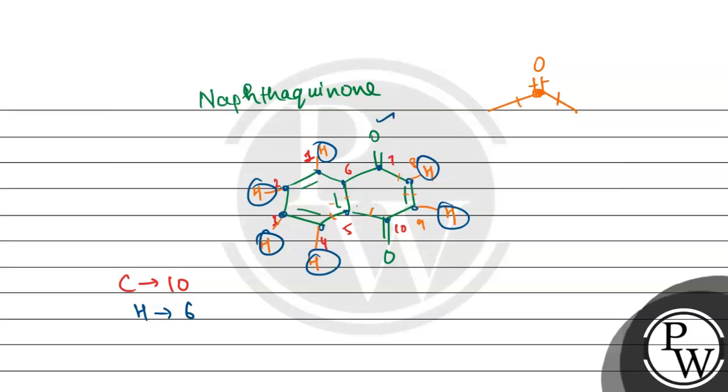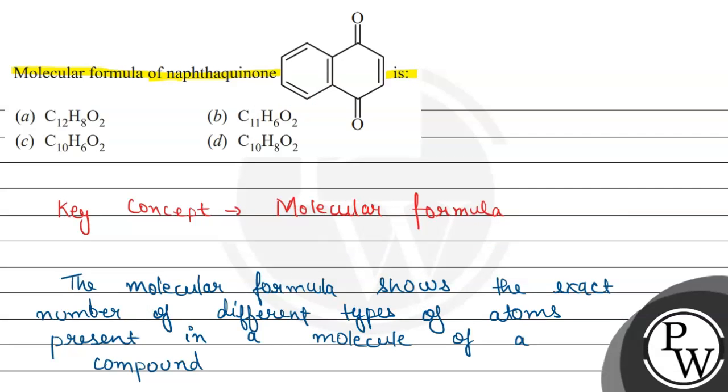Now, the remaining element is only oxygen atom. The oxygen is O2. Now, let us write the formula: C10H6O2. From the given options, we can see option C is the correct answer. Let us mark option C. Options A, B, and D are incorrect. Hope you understood it well. Best of luck.